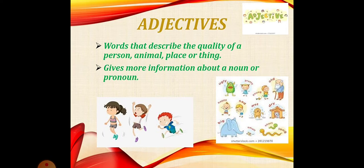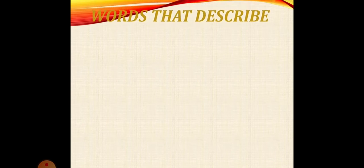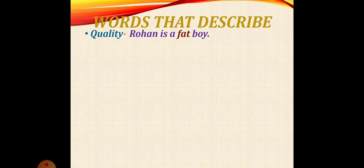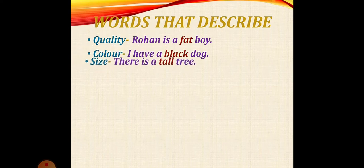Let me make it more clear to you with the help of following examples. One by one, I'll be telling you. Number one: Rohan is a fat boy. Here, the word fat describes what kind of boy Rohan is.